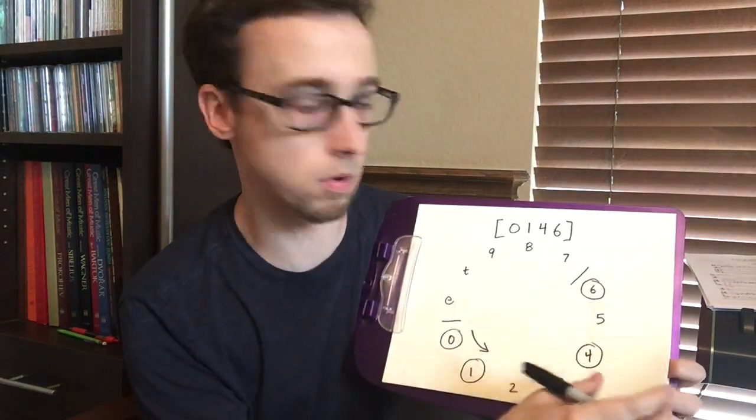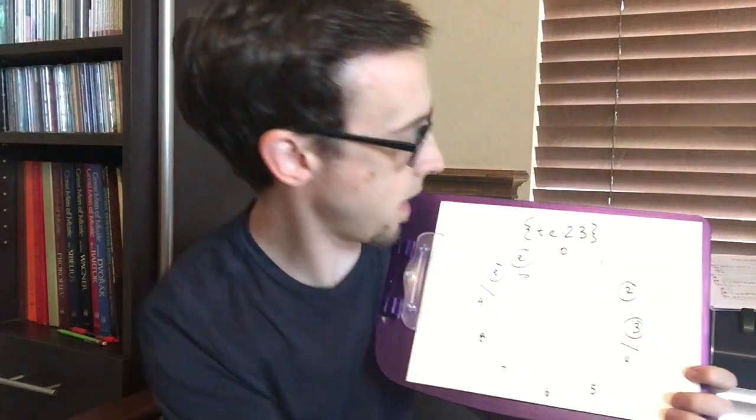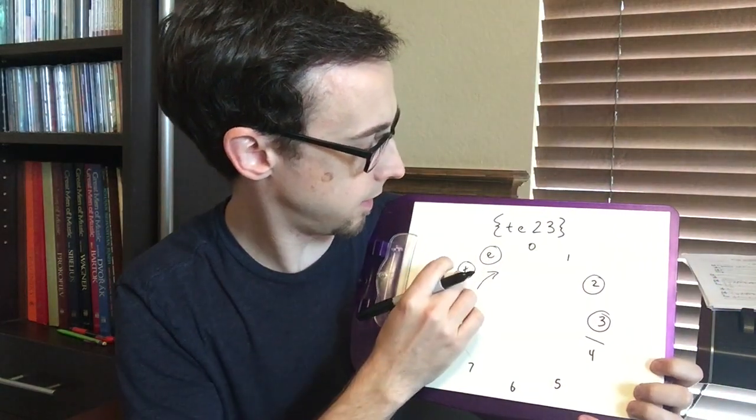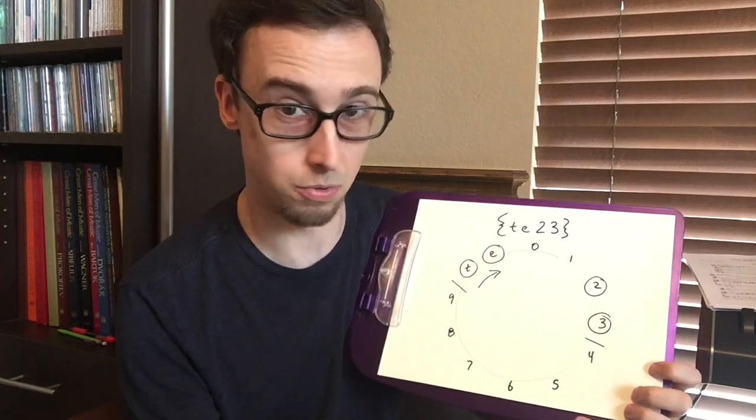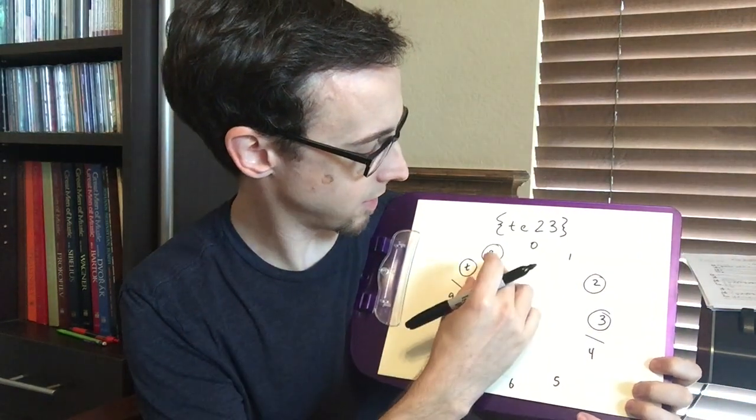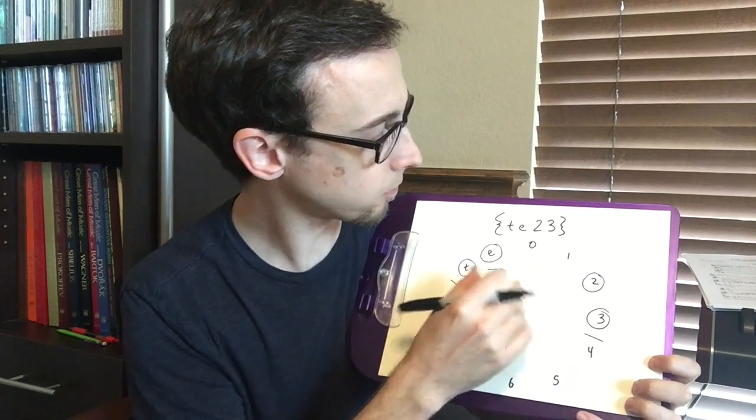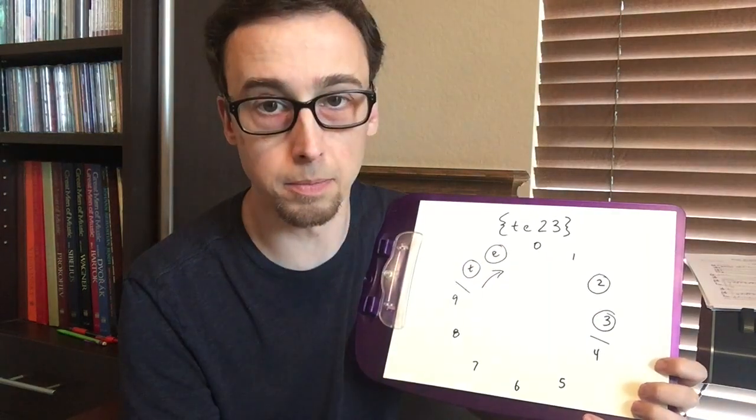Let's look at one more. Here we have our normal order is t23 (ten, two, three). What do you notice about this pitch class set? It's symmetrical, right? We can see that it has a half step on either direction and then a minor third in the middle.